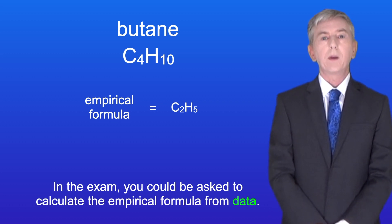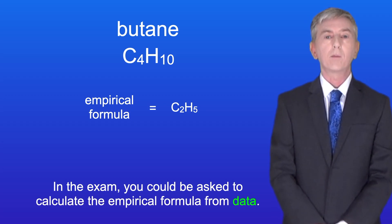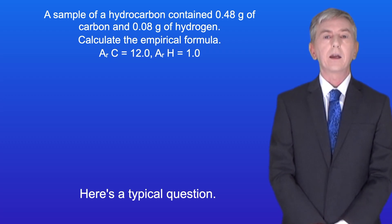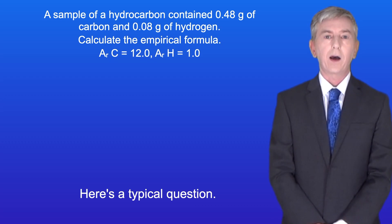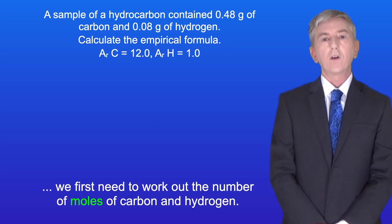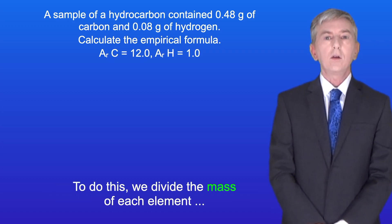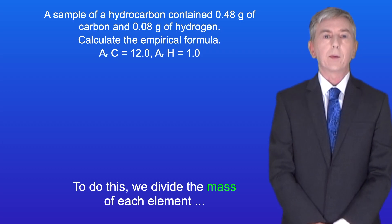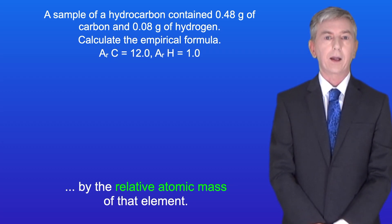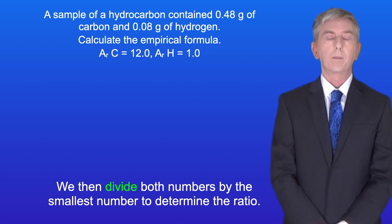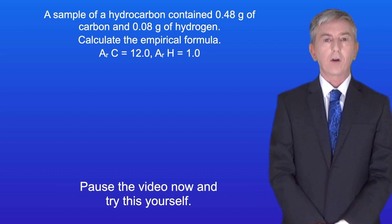In the exam you could be asked to calculate the empirical formula from data. Here's a typical question: a sample of a hydrocarbon contained 0.48 grams of carbon and 0.08 grams of hydrogen — calculate the empirical formula. To answer this, we first need to work out the number of moles of carbon and hydrogen by dividing the mass of each element by its relative atomic mass. We then divide both numbers by the smallest to determine the ratio.